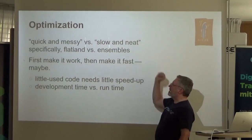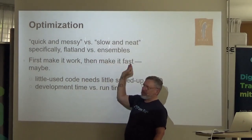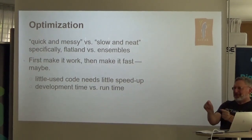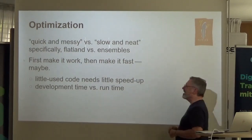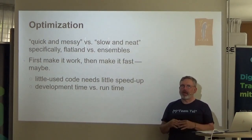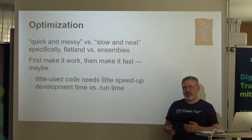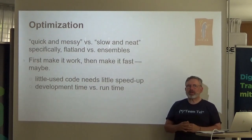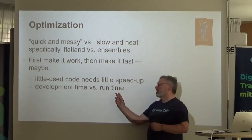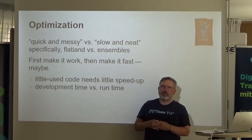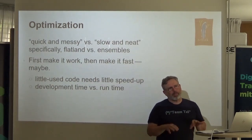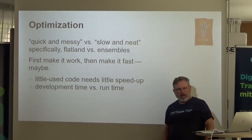Optimization: do you want quick and messy versus slow and neat? Specifically, flatland versus the ensemble — why can't we have quick and neat? I think that question's for Donald. The standard rules of optimization apply: first make it work, then make it fast — maybe, if you need to. If you're only calling one of these operators once at the top of your program, don't waste your time making it fast. Little-use code needs little speed-up. And if the theory is right that you're going to help people write correct code faster, you may be optimizing your development time by using some of these slower ensembles, but runtime's another issue.